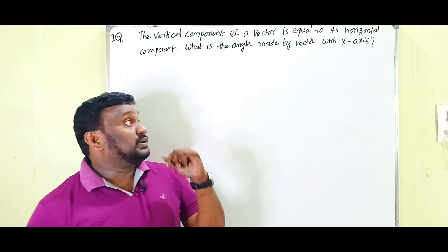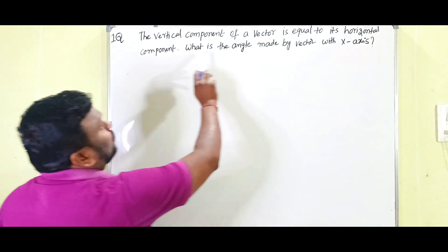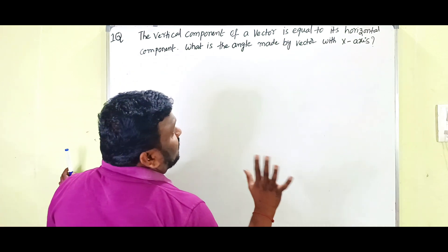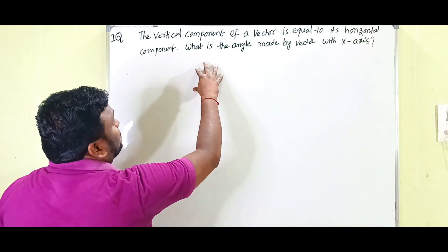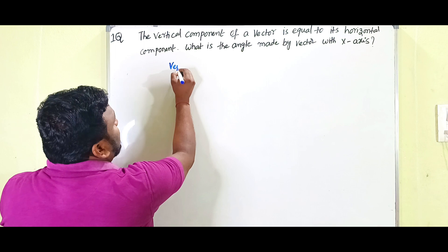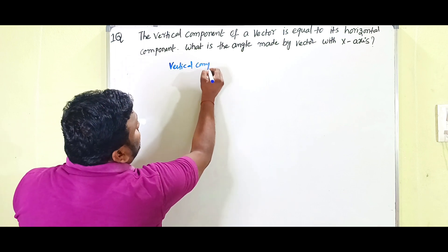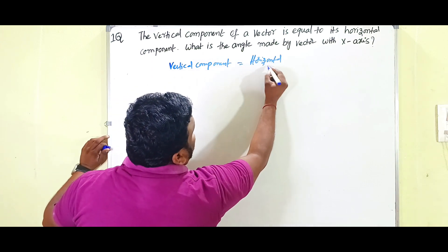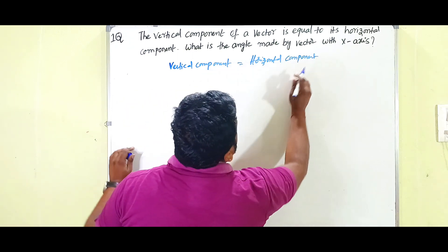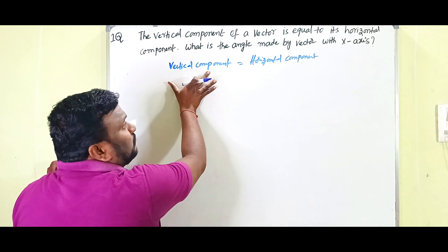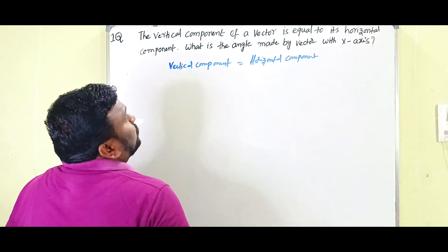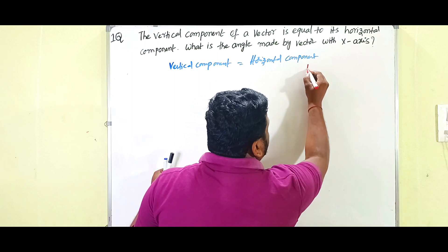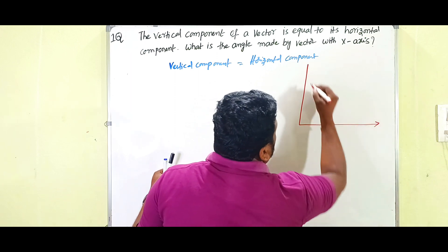The vertical component of a vector equals its horizontal component. What is the angle made by the vector with the x-axis? This is a two-mark question. The condition is: vertical component equals horizontal component. We need to find the angle with the x-axis — a very simple but very important question.